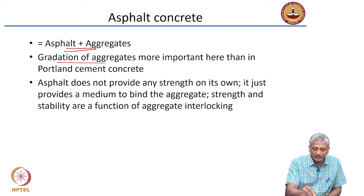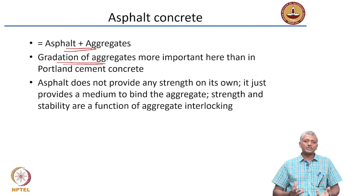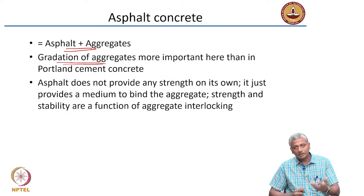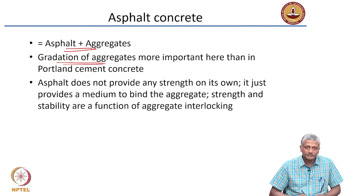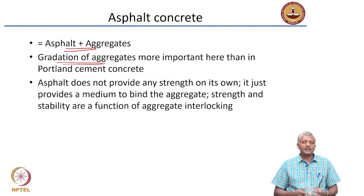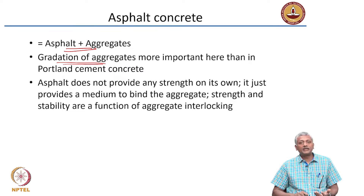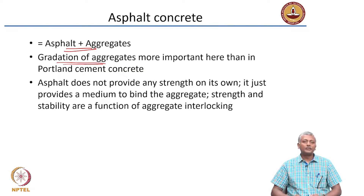The gradation and particle size of the aggregates is much more important in asphalt pavements than in concrete pavements, because in concrete the strength is mainly attributed to the hydration of cement paste. In asphalt concrete, the asphalt's main function is to ensure that the aggregates are bound together, while strength and stability are more a function of how well the aggregates are interlocked together.